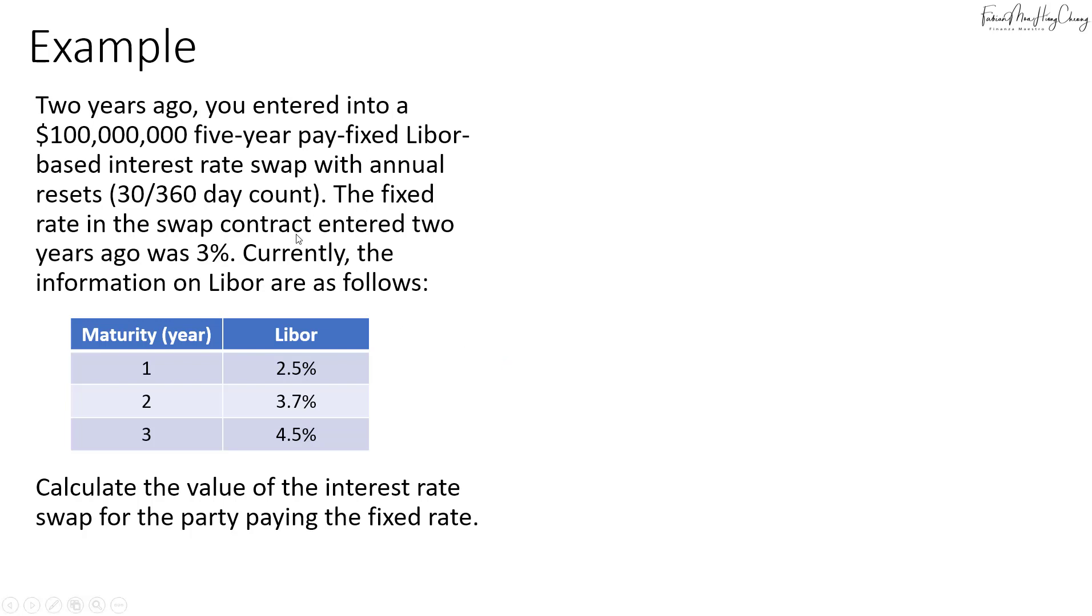Now the fixed rate in the swap contract entered two years ago was 3%. Currently the information on LIBOR are as follows: maturity from one, two, and three years with LIBOR rates for one year, two years, and three years. So you're required to calculate the value of the interest rate swap for the party that's paying the fixed rate.